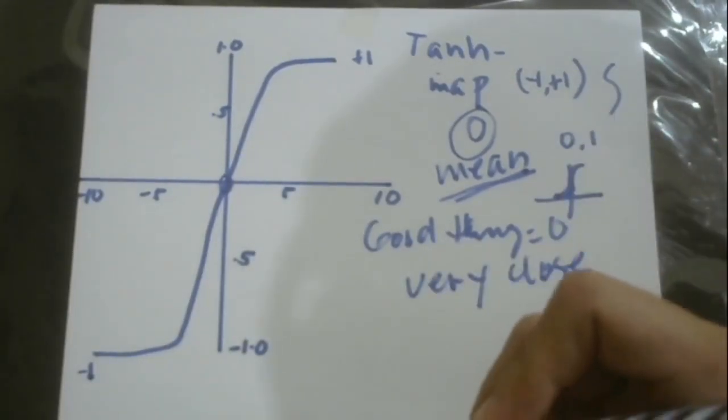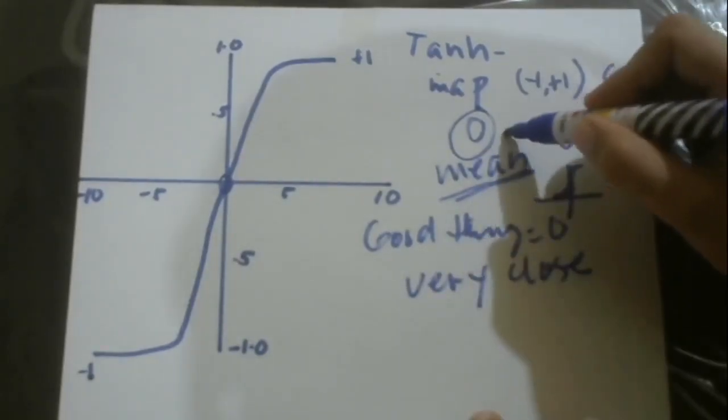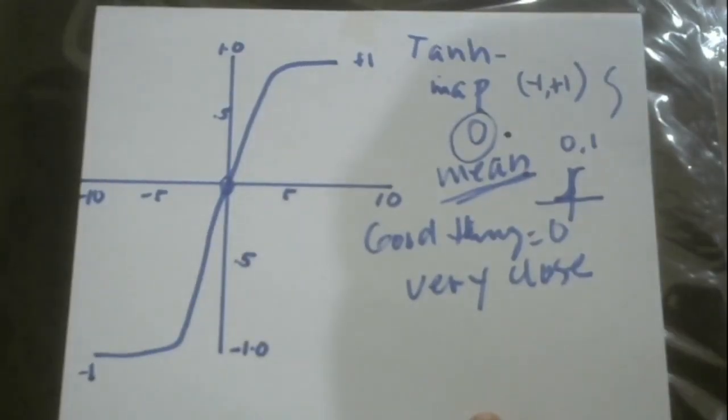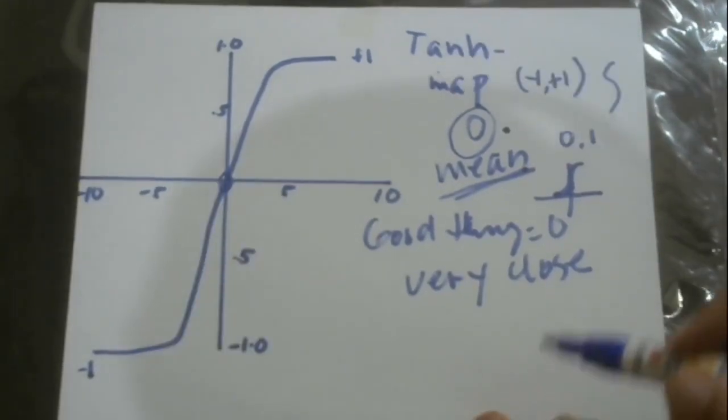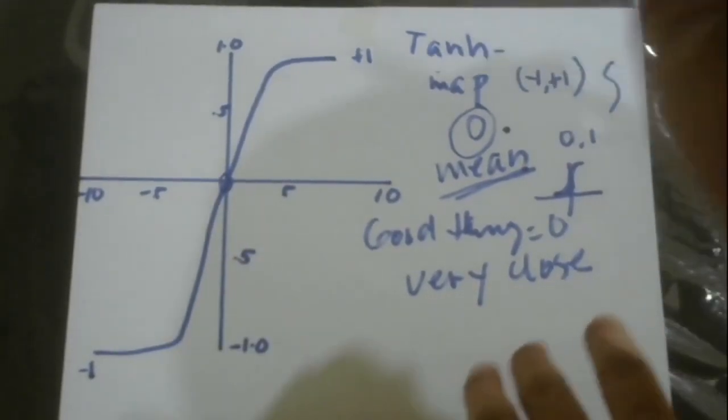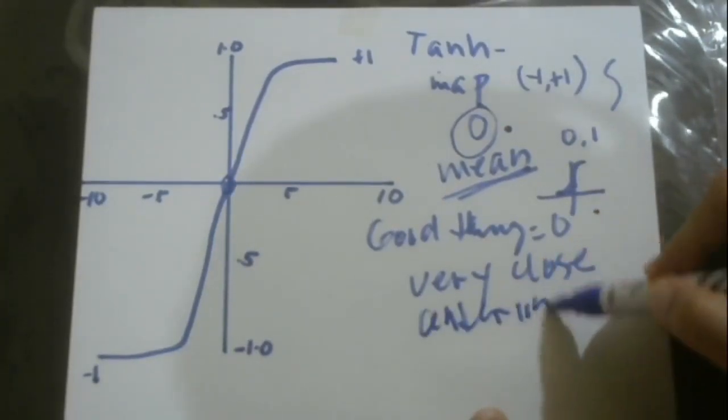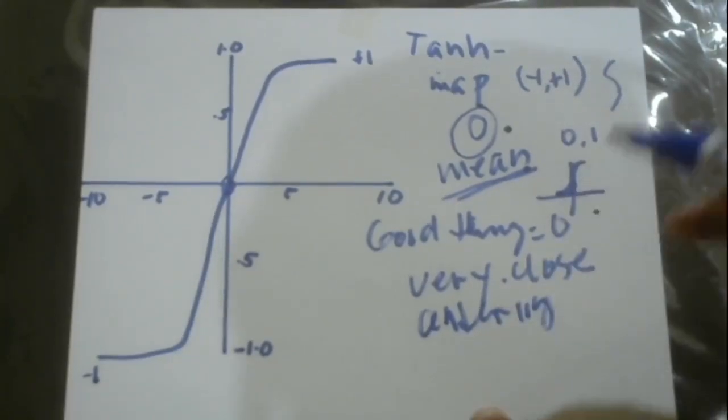The mean can be zero or very close to zero. What's the good thing about this? It's very helpful in centering the data at zero, or at least close to zero.